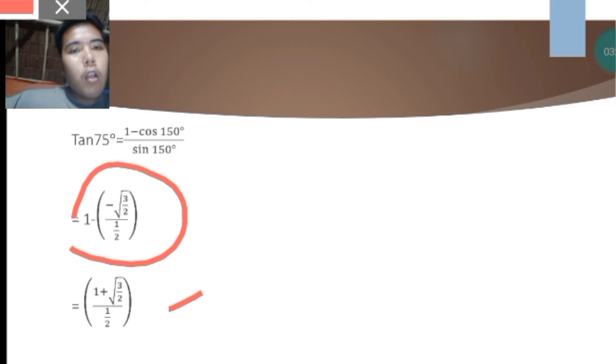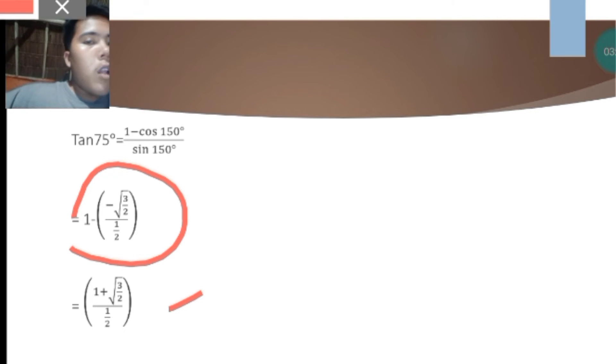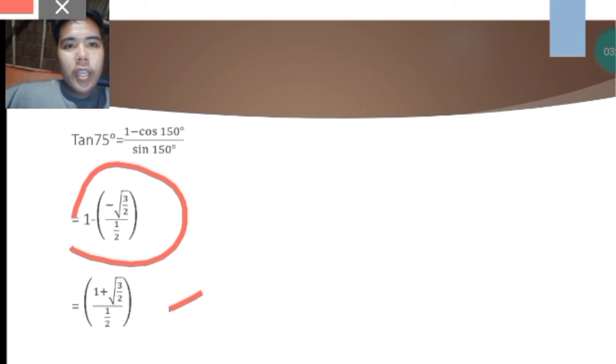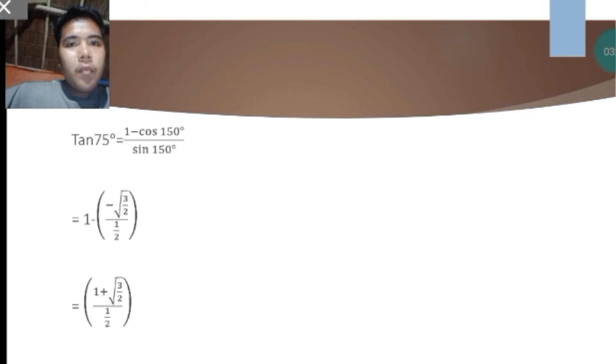After distributing the negative sign, we have 1 plus square root of 3 over 2, all over 1/2.